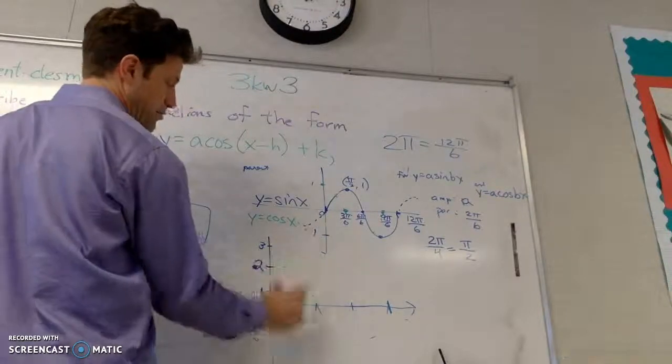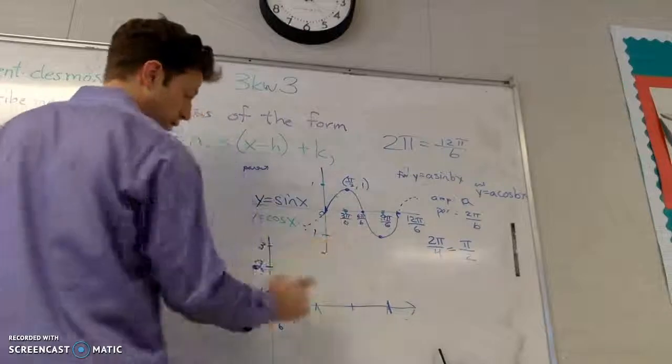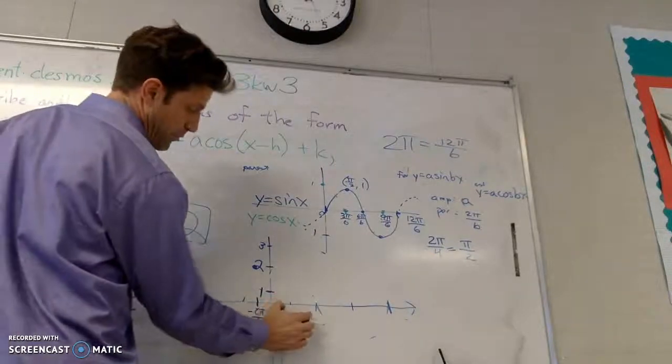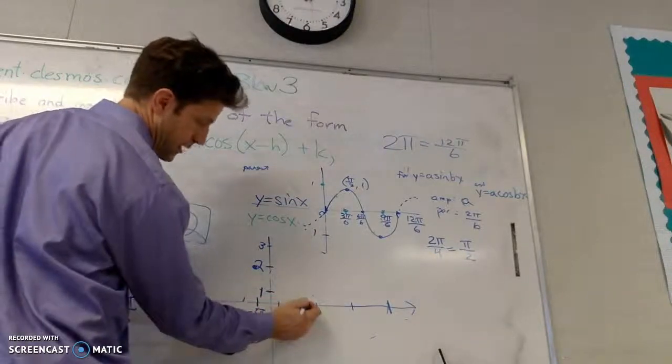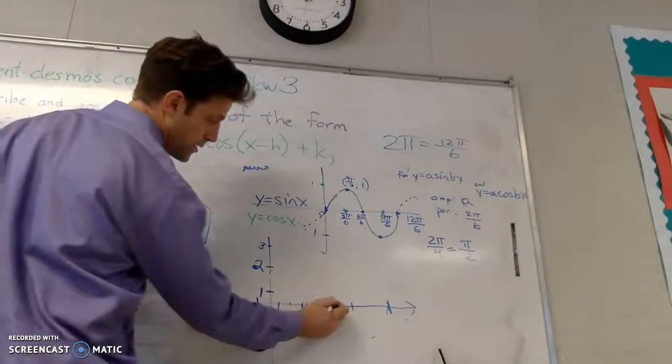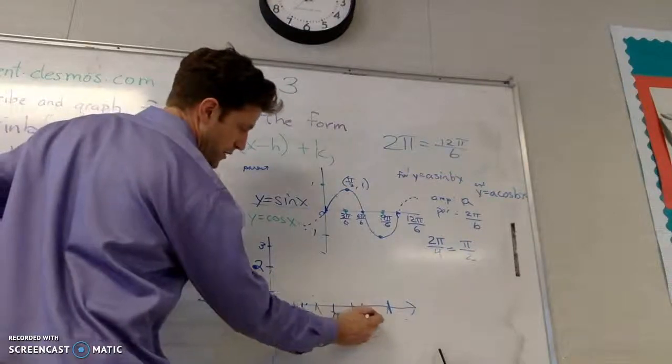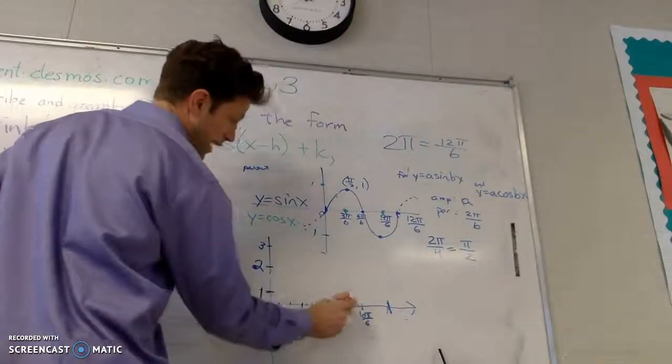And then, I can just move, really moving pi over two over every time. By moving pi over two, I'm moving three pi over six, so that's four pi over six, seven pi over six. Ten pi over six. That's the graph.